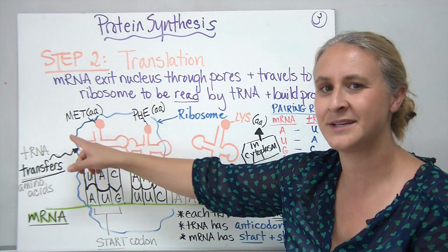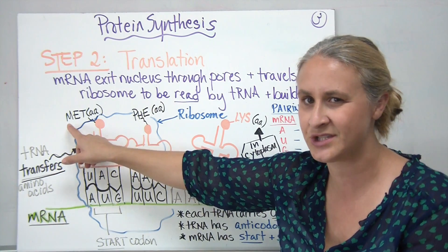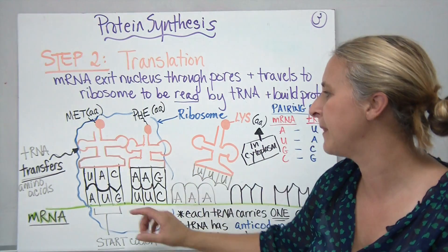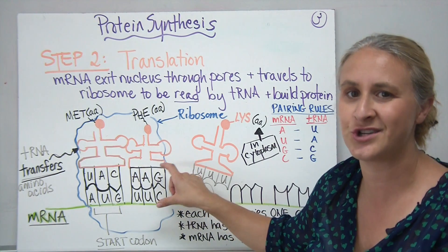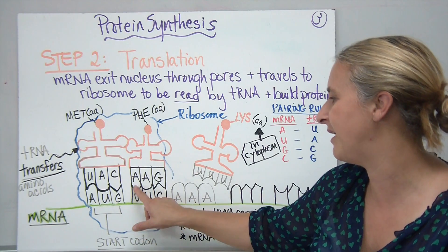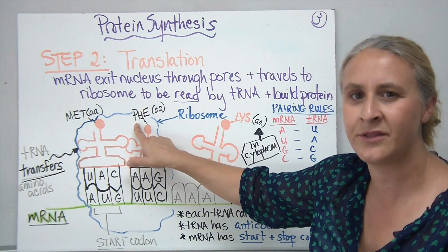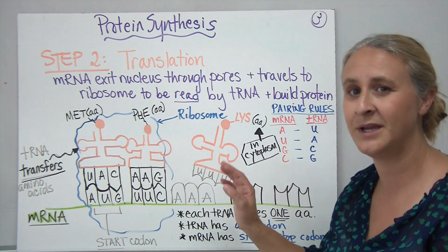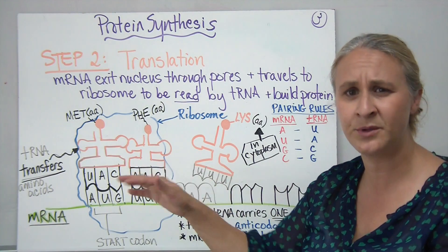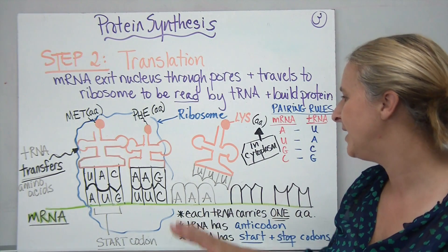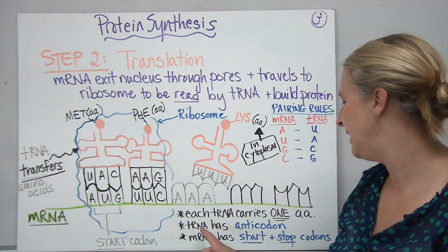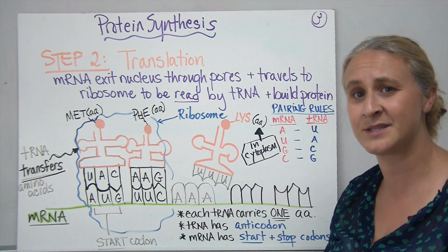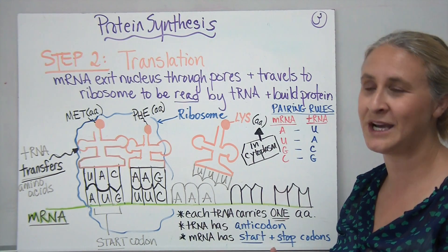Each transfer RNA has a special section where an amino acid is attached, and that amino acid is specific for that code. In this case, we bring in a special amino acid abbreviated MET. Once it brings that one in and reads that code, it goes on to read the next chunk of three letters — the next codon — and does the same thing. For example, the next codon on the transfer RNA is AAG, and it brings in another amino acid, PHE. This continues until we've built the entire protein and the stop codon tells it to stop. Ribosomes float in the cytoplasm, so multiple proteins can be built simultaneously in different ribosomes.